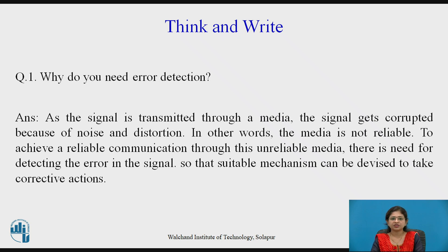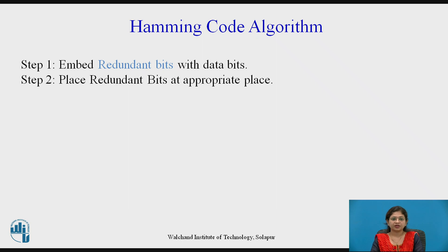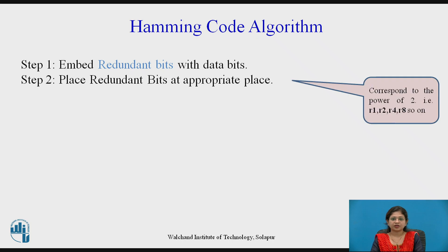Let's continue with the Hamming code algorithm. The first step is to embed the redundant bits with the data bits. Place the redundant bits at appropriate positions — these positions correspond to powers of 2: r1, r2, r4, r8, and so on. The number of redundant bits depends on the data and is always at positions that are powers of 2.